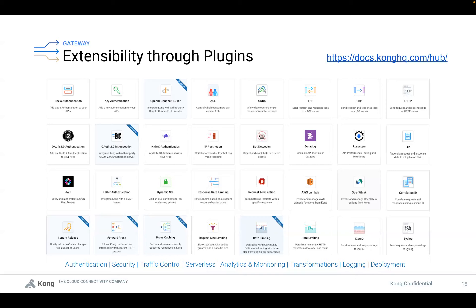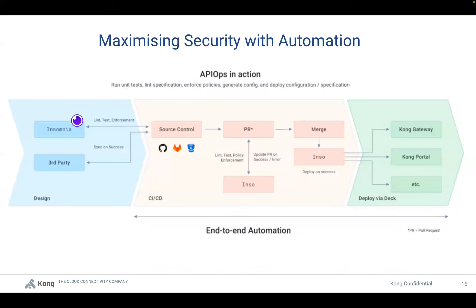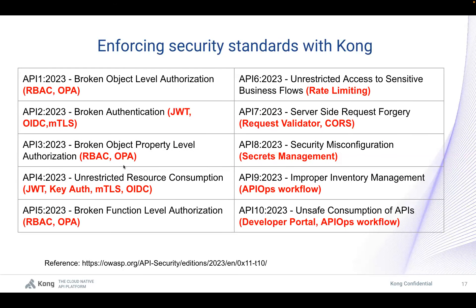How do we enforce all this security at scale? We can enable authentication and authorization plugins, but how do we make sure security baselines are enforced at scale, especially with microservices? Kong has established what we call APIops to help automate and enforce all these important security plugins at scale, so we can move with the speed of how microservices are being deployed.